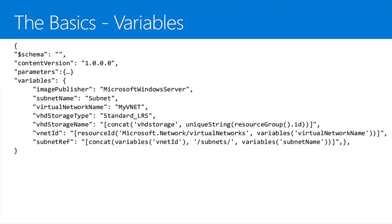In the variables section, you can hard-code things like image names — maybe Microsoft Windows Server — or make your virtual networking static. But you can also make them more dynamic using functions like concat and resourceId to build out strings for storage names, virtual networks, or subnet names, and use those as variables throughout the template.